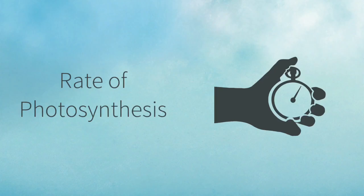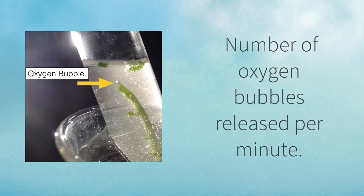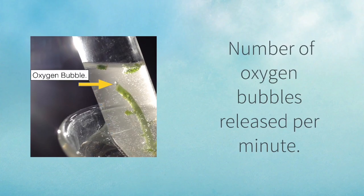We determined our rate of photosynthesis by counting the number of oxygen bubbles that were released in one minute at that particular light intensity.